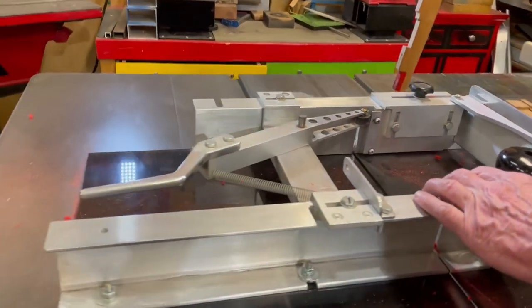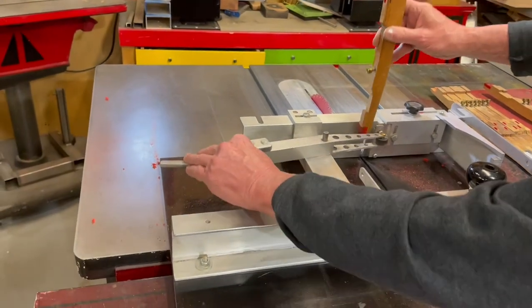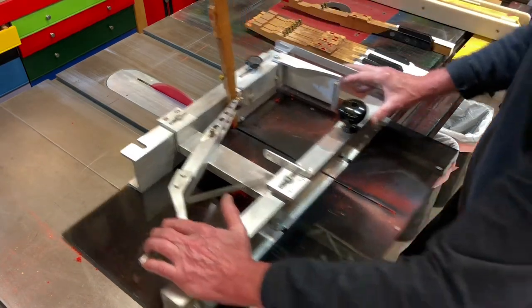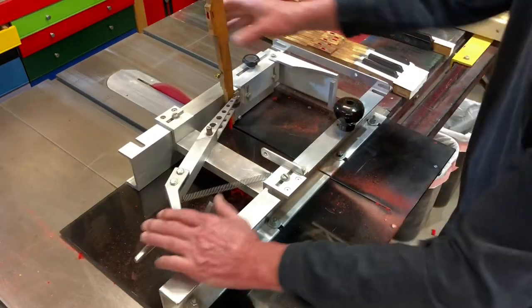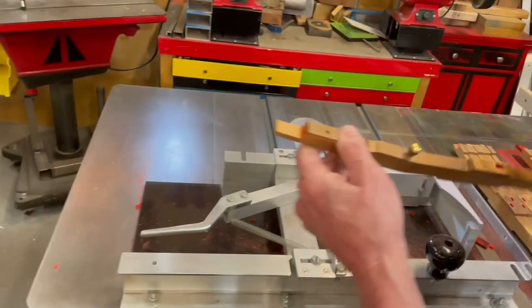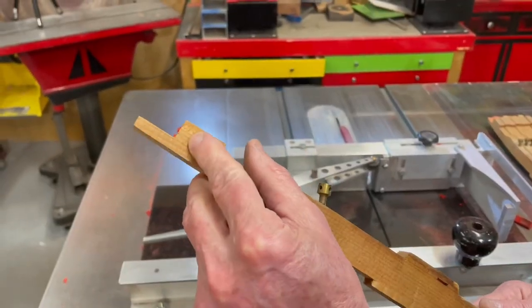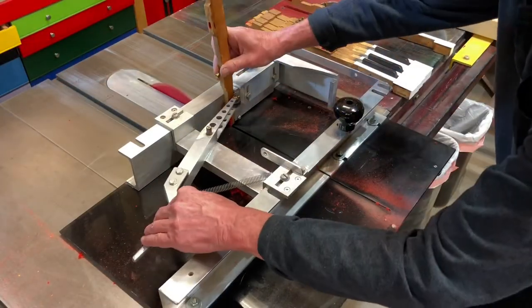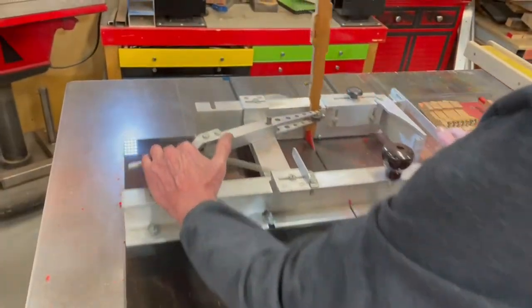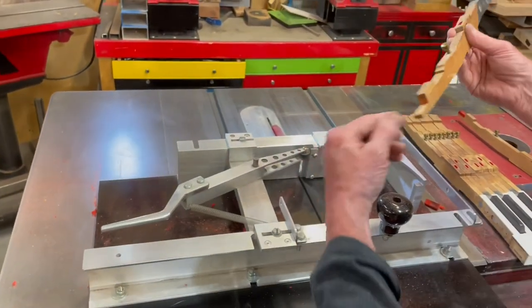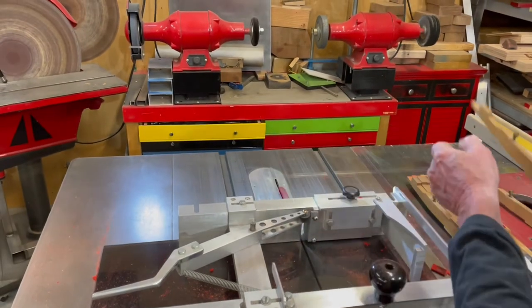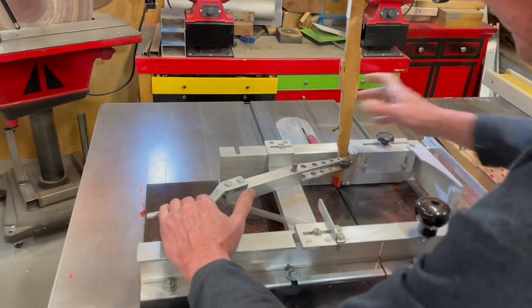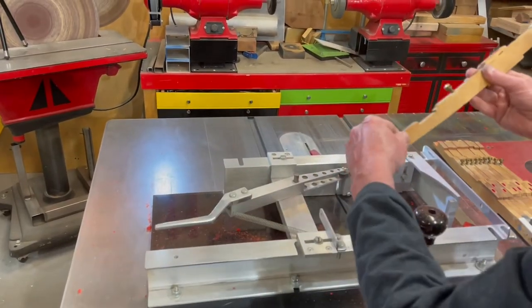Now I want to show you how to do it. We place the key, and we slide it through. As you see, it cuts right by the glue, and you keep going.